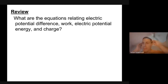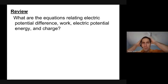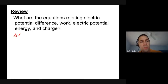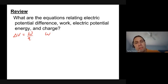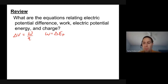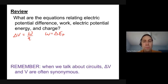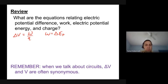Electric potential difference is equal to the work done per unit charge, moving a test charge from one spot to another. The work done is also synonymous with the change in electric potential energy. When we talk about circuits, electric potential difference and electric potential — delta V and V — are often synonymous.